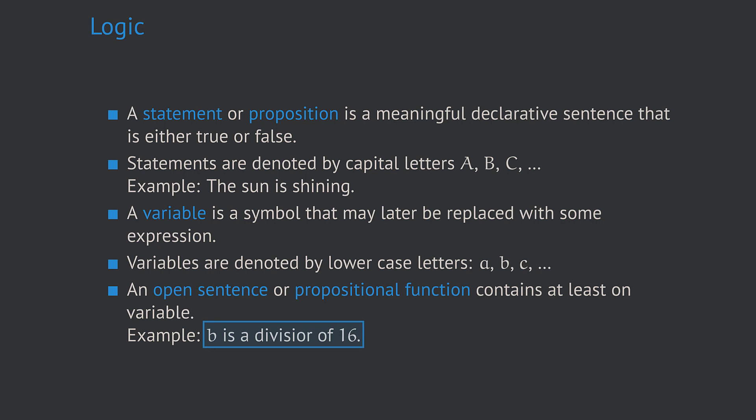For instance, if b equals 4, the sentence is true. However, if b equals 3, the sentence is false. In particular, this example is not a statement because it can be both true or false depending on the value of b.